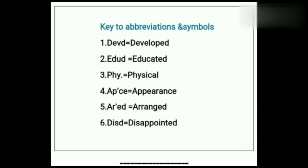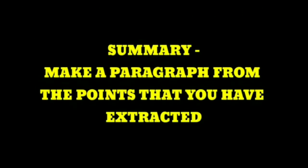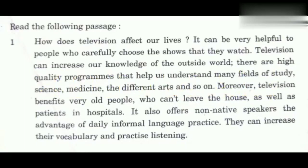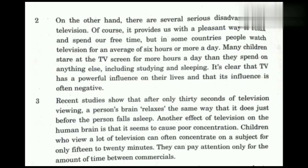Now we move towards summary writing — it is very easy. For summary writing, you just have to make a paragraph from the points you have extracted from the passage. One extremely important point I forgot to mention: in note making, you should never abbreviate a proper noun. A proper noun is the name of a person, place, or thing — for example, 'Alexander' is a person's name and 'Hosahalli' is a place. You cannot abbreviate these. Remember to use only four to six abbreviations.